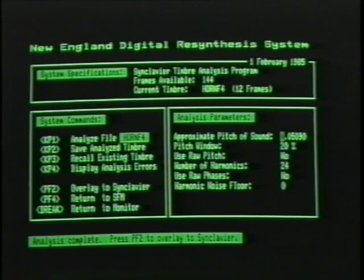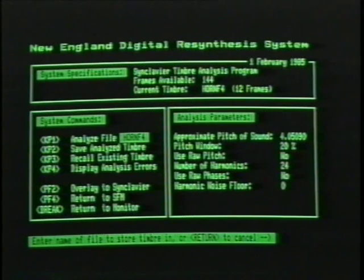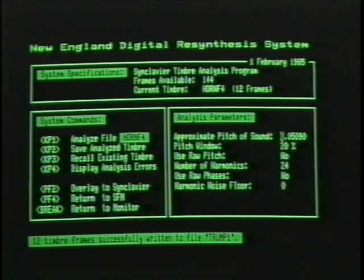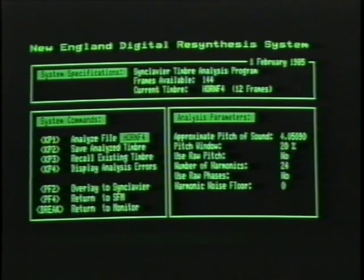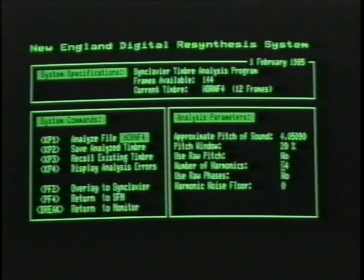Under system commands, KP2 saves the analyzed timbre. Touch keypad 2, enter the file name — for example, TRMP1 — and hit return. This confirms 12 timbre frames successfully written to a file called TRMP1. On the right, under analysis parameters, you can change various settings: a pitch window to control pitch tracking, toggle raw pitch with the space bar, and choose up to 128 harmonics to analyze a sample for resynthesis.